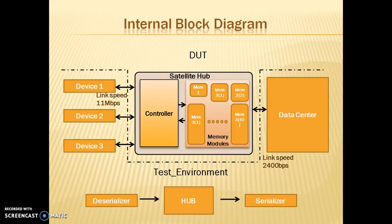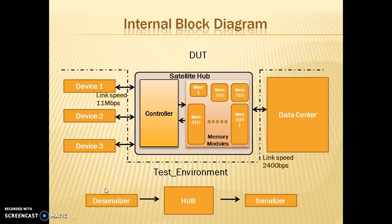This is the internal block diagram of the design. The satellite hub is the DUT, and the three devices and the data center are part of the test environment. The satellite hub consists of a controller and memory modules. The controller organizes data in memory and stores the tag, memory address, and memory access in the form of a header. The memory module consists of 13 memories. Apart from the hub, there is a deserializer that converts the bit serial data from the device into 16-bit parallel data, and a serializer that converts 16-bit parallel data from the memory module back to bit serial data during a read operation.